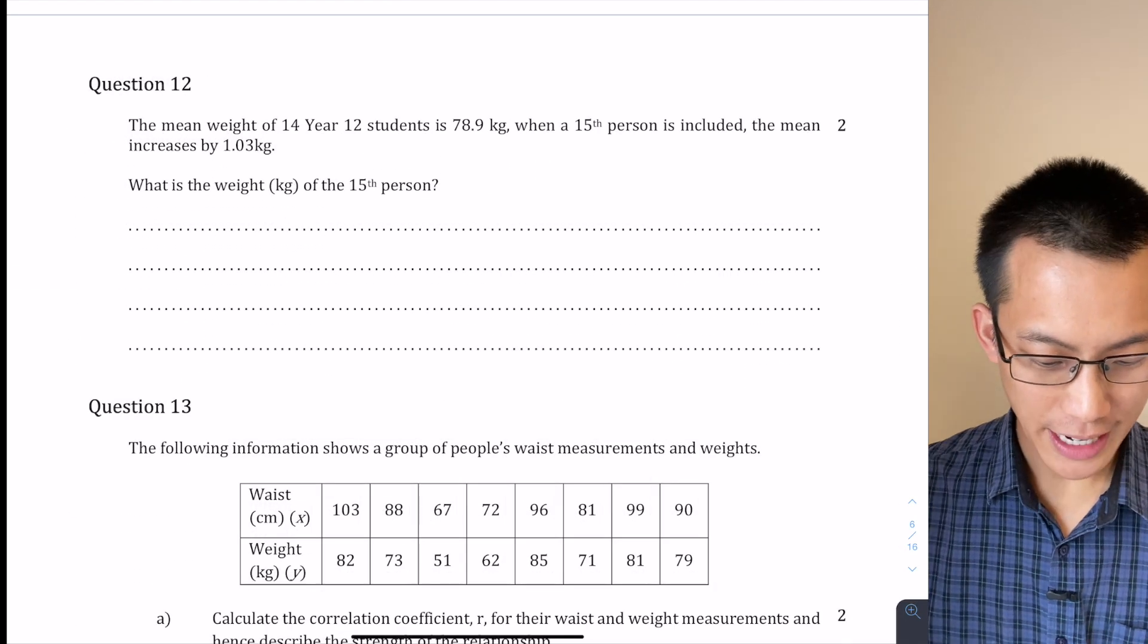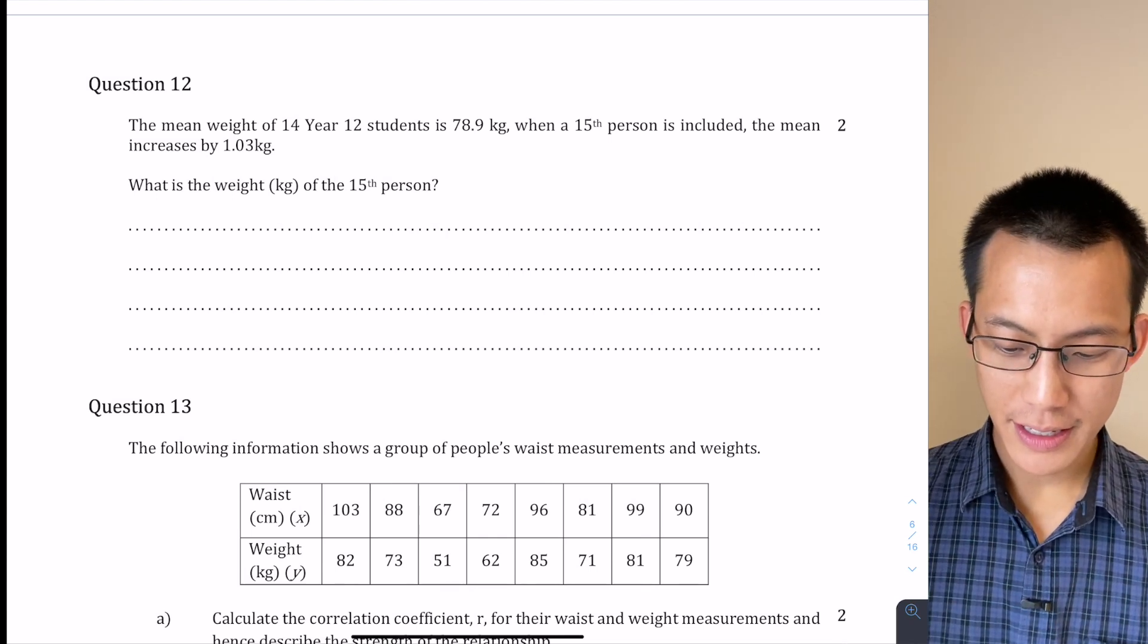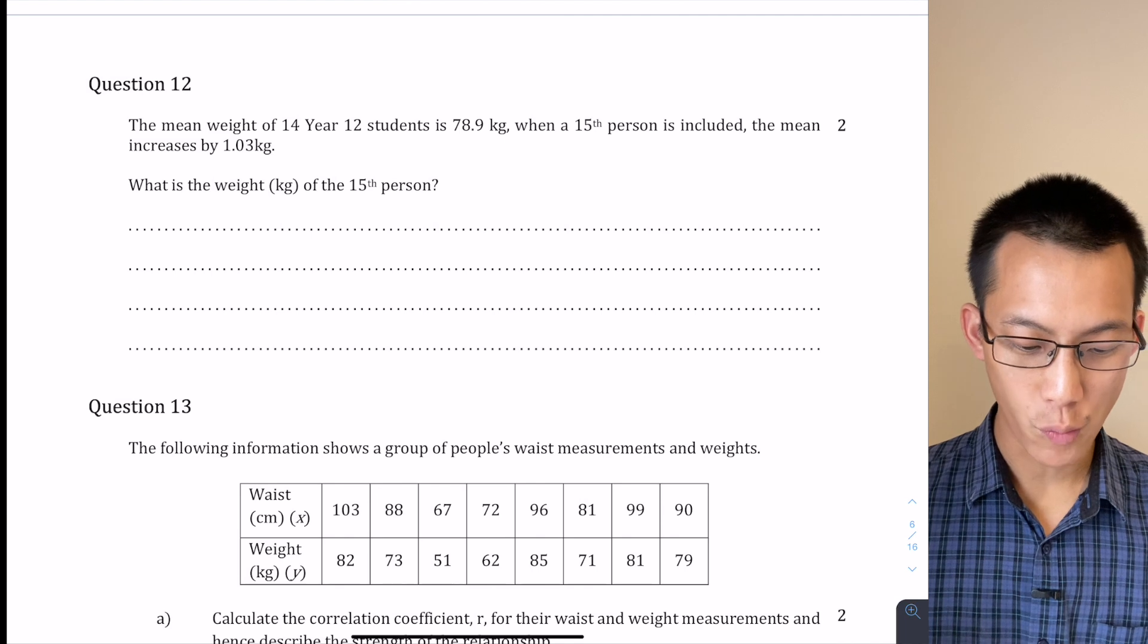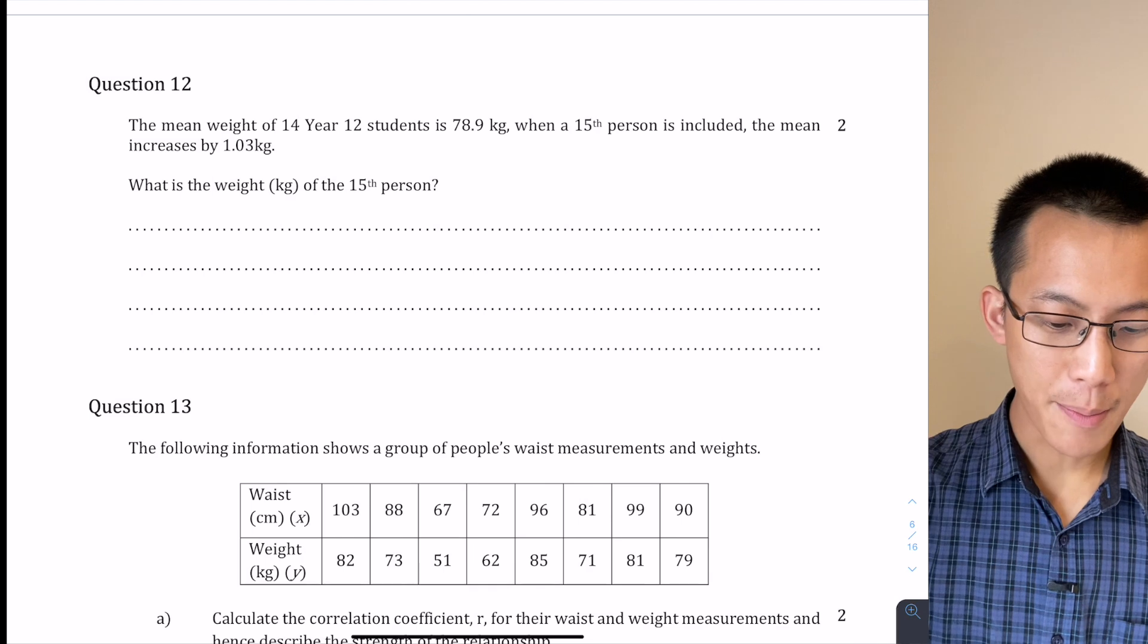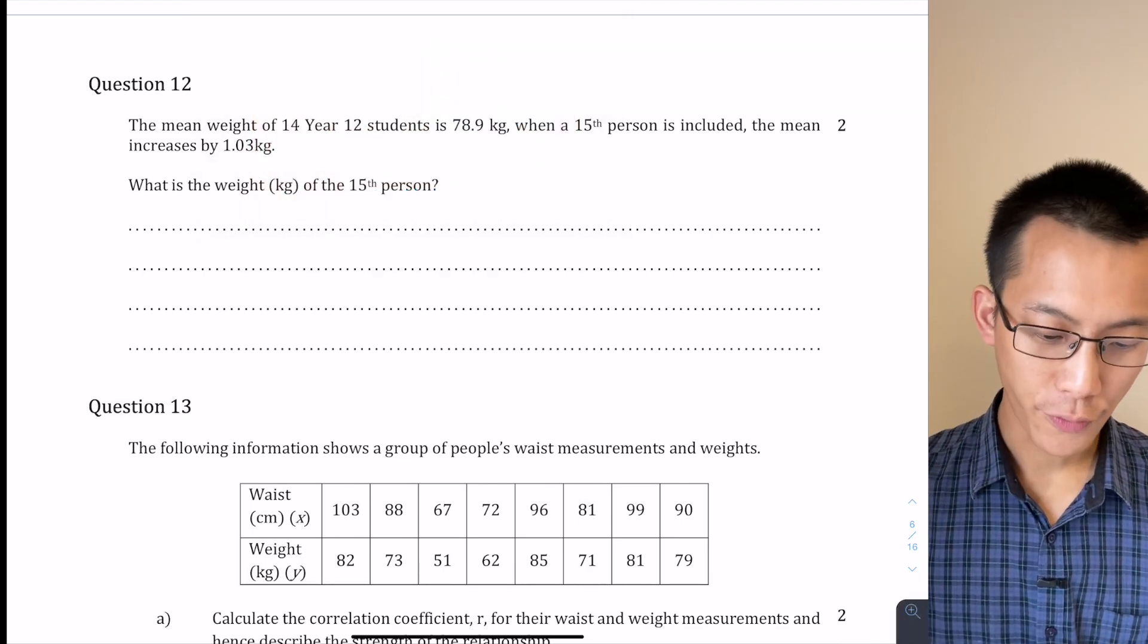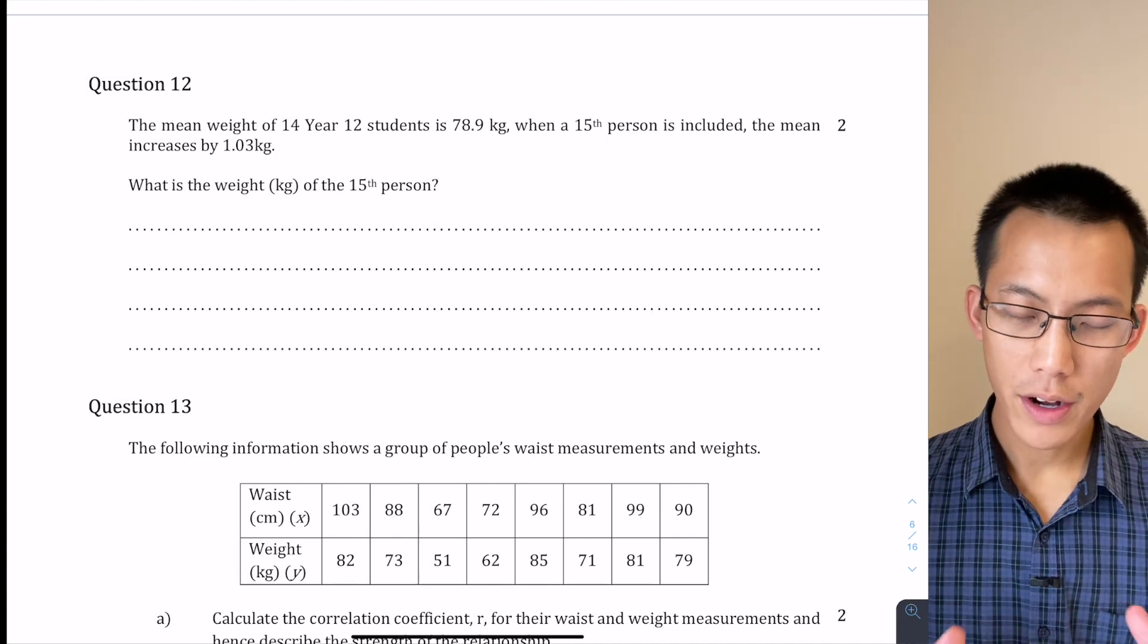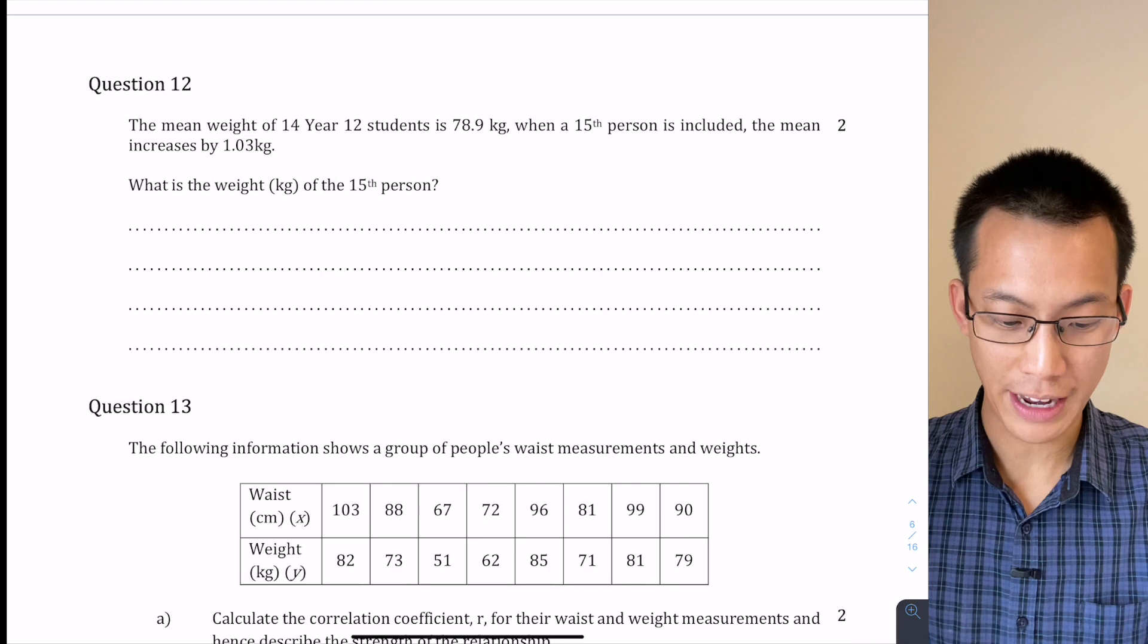The mean weight of 14 Utah students is 78.9 kilograms when a 15th person is included the mean increases by 1.03 kilograms. What's the weight of the 15th person? Alright now before we tackle this question and start to put some calculations in here the first thing we've got to do is remember what are we actually calculating and how do we use that to form a strategy to work out what the answer is?